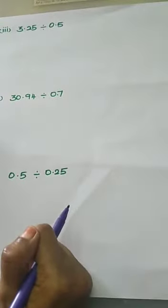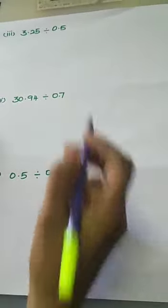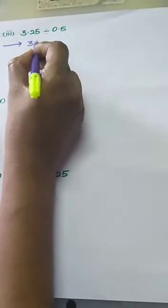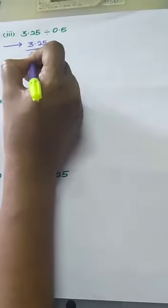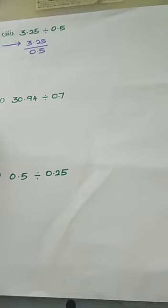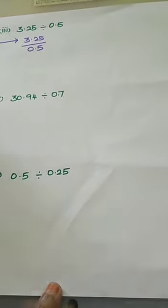Next problem: division of a decimal number by a decimal number. Our question is 3.25 divided by 0.5. Now we have a decimal value for both numerator and denominator. The numerator has two decimal places and the denominator has only one place. We cannot choose 100 for the numerator and 10 for the denominator — that has no meaning.